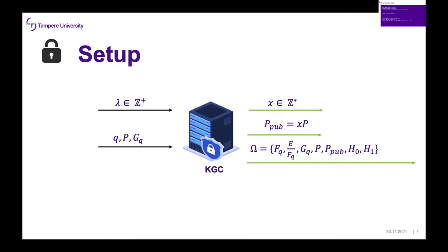For the setup algorithm, the Key Generation Center takes as input a secret parameter, and then outputs an MS key — which is the secret key for itself — its public key, and then publishes a set of system parameters, which include its public key and two hash functions required for all entities to proceed with the scheme.